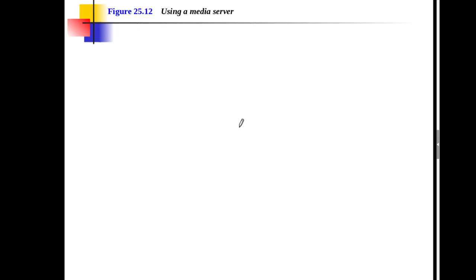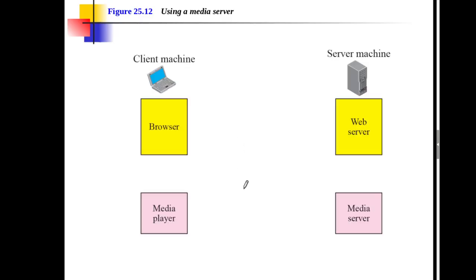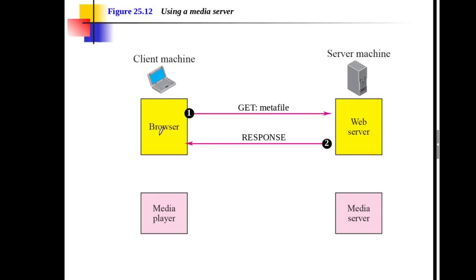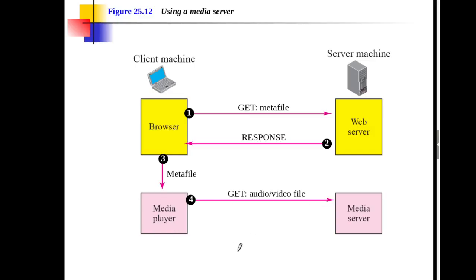The third approach uses a media server. Here you have both a web server and a media server. The web server stores the meta file information, while the media server provides the actual response. The HTTP client accesses the meta file from the web server, this meta file is passed to the media player, and the media player uses the URL in the meta file to access the media server and download the file — downloading can use any protocol based on UDP.